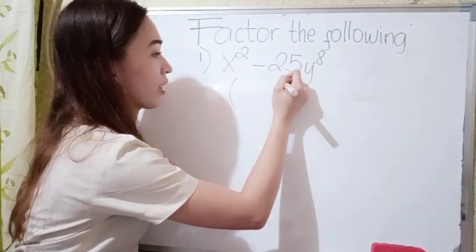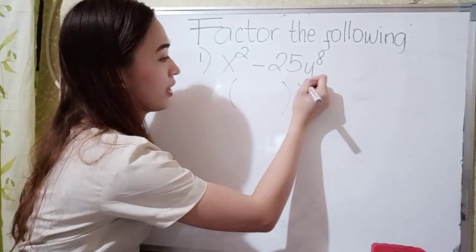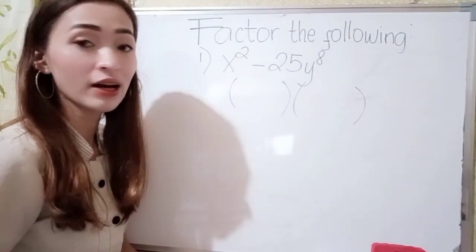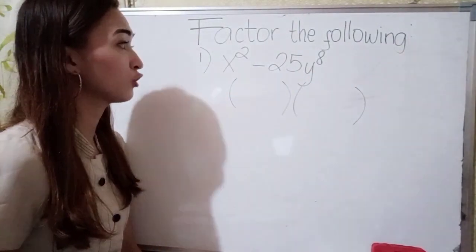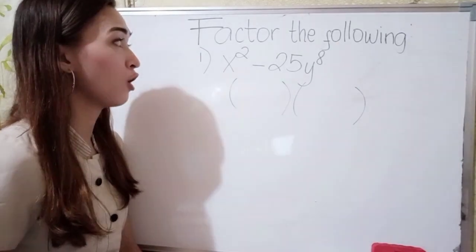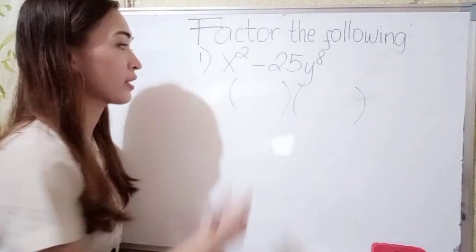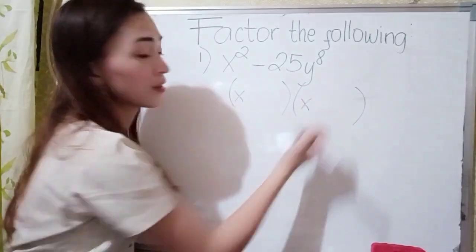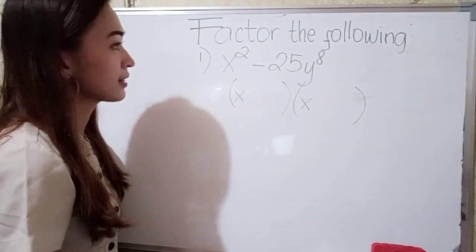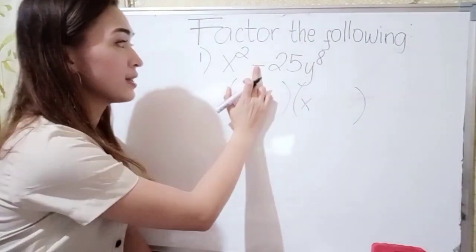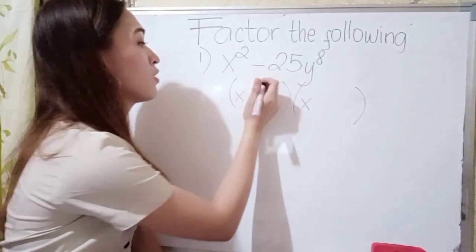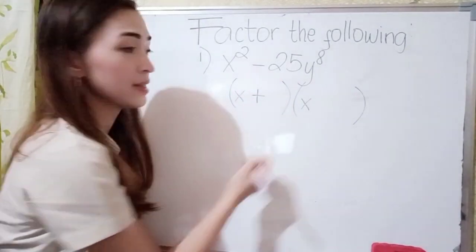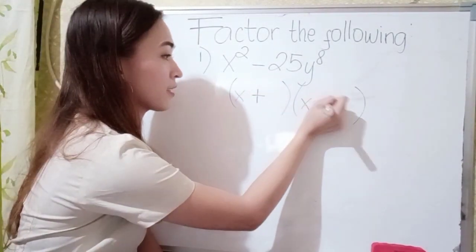For the difference of two squares, so it's just like this. What are the factors of x squared? The factors of x squared is x times x. Since this is minus, what we're going to do is write plus in one factor and minus in the other.